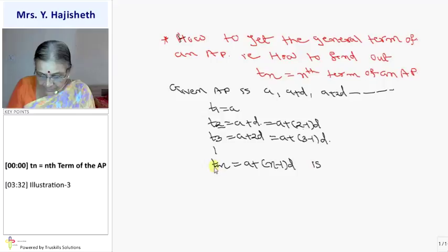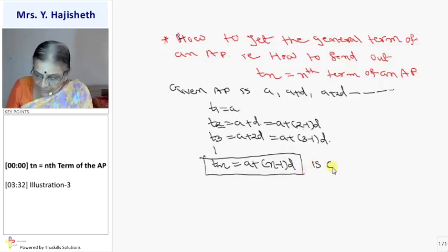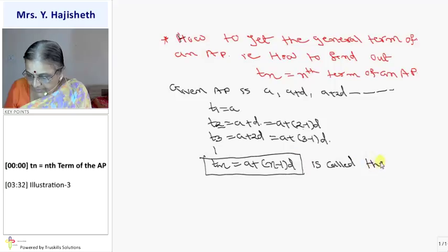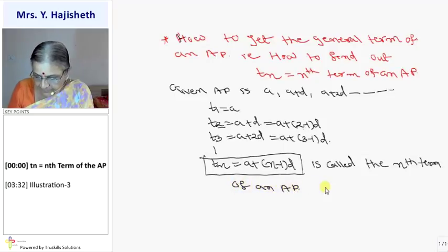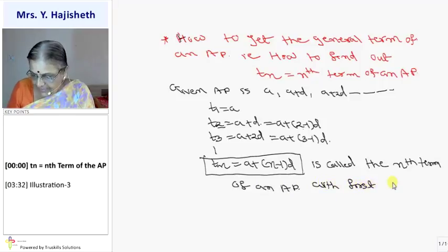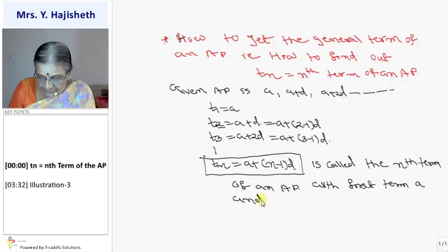This is called, this Tn is A plus N minus 1 D. Tn is called the Nth term of an AP.